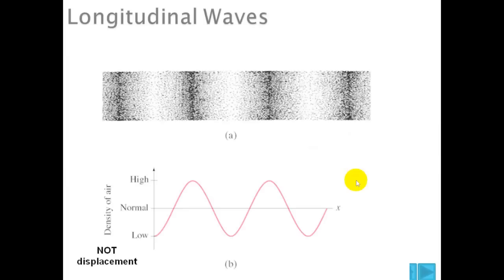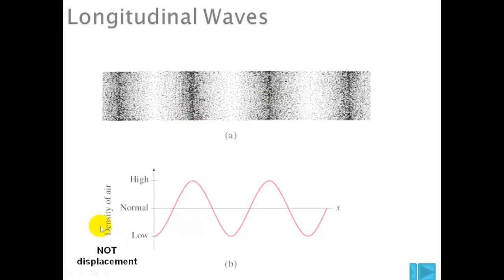Here we have a graph of how the density of the air varies along this wave. This is a point of maximum density. This is another point of maximum density. Notice this is actually a measurement of density, not of displacement. We will look at a displacement-distance graph in a moment.